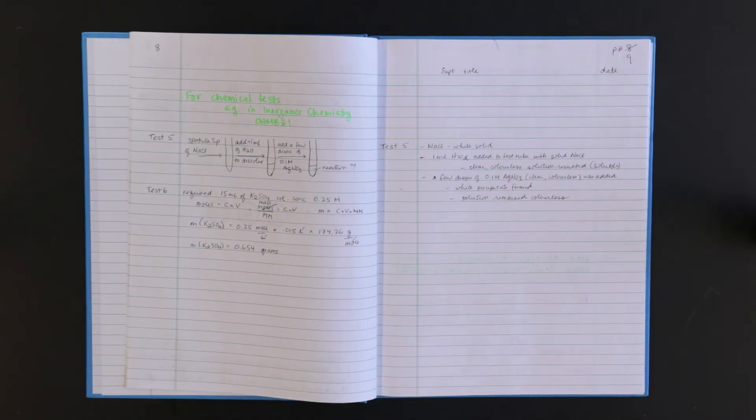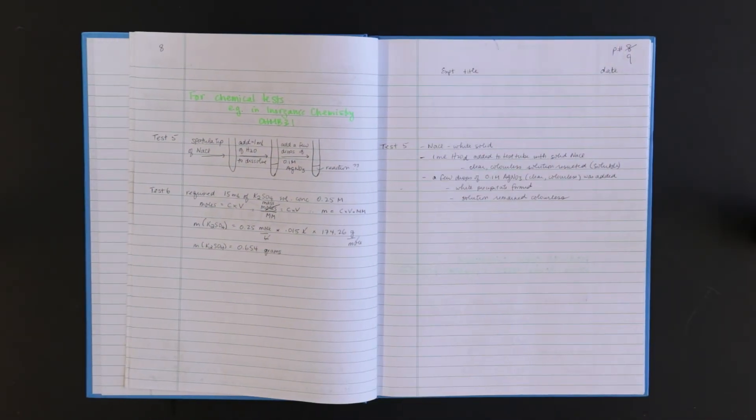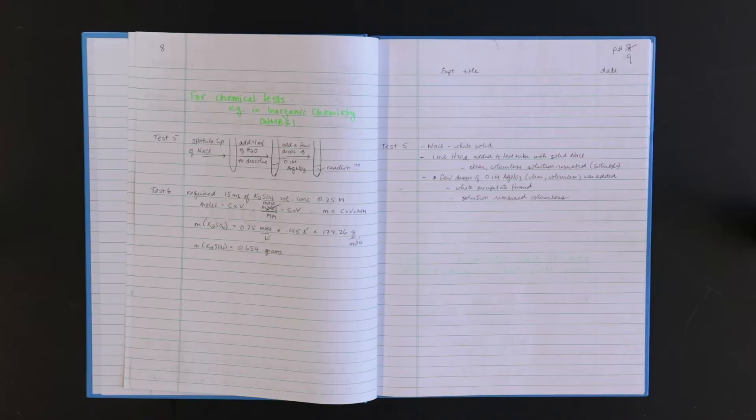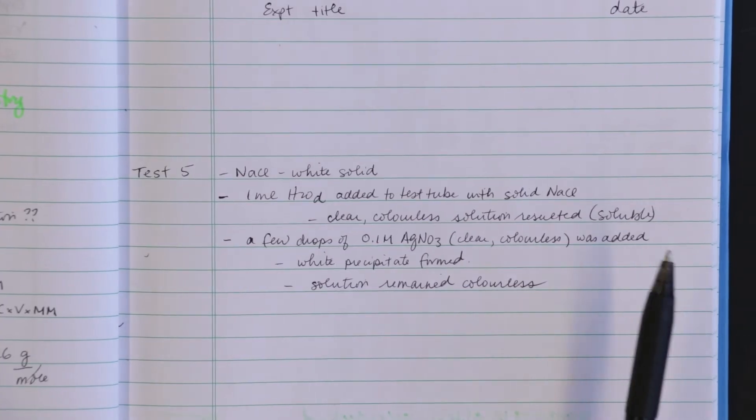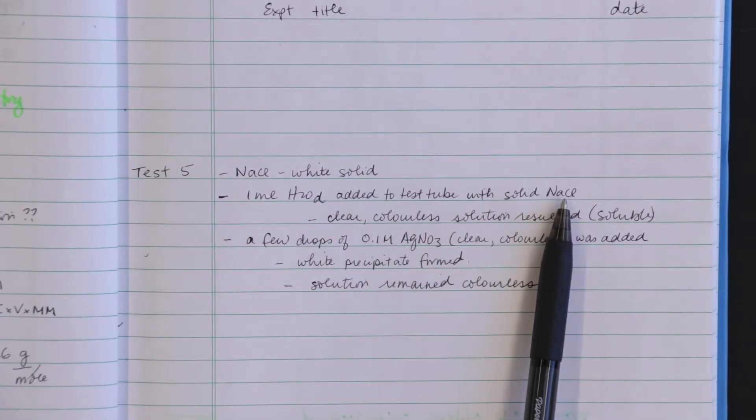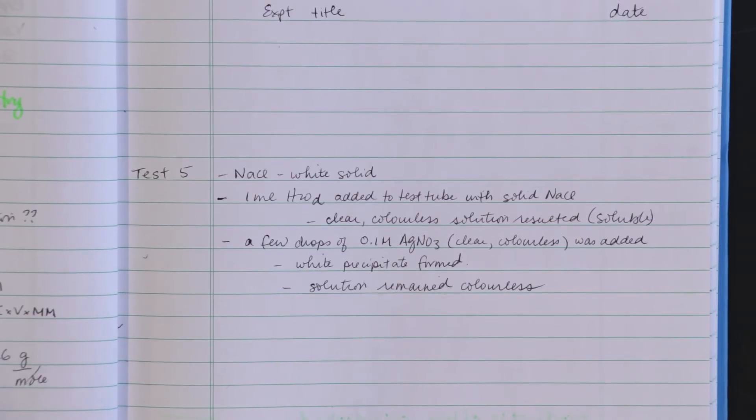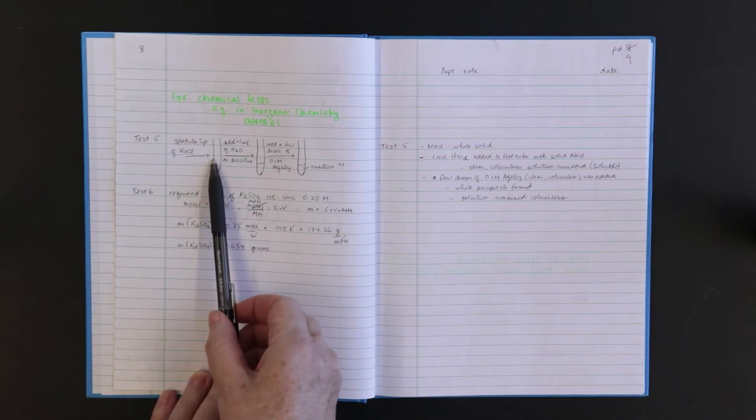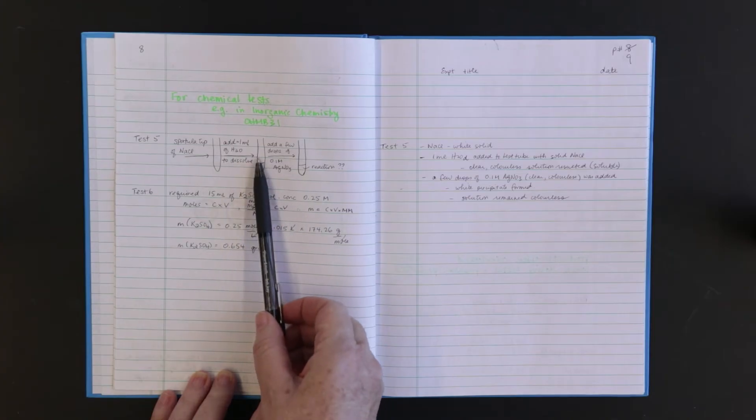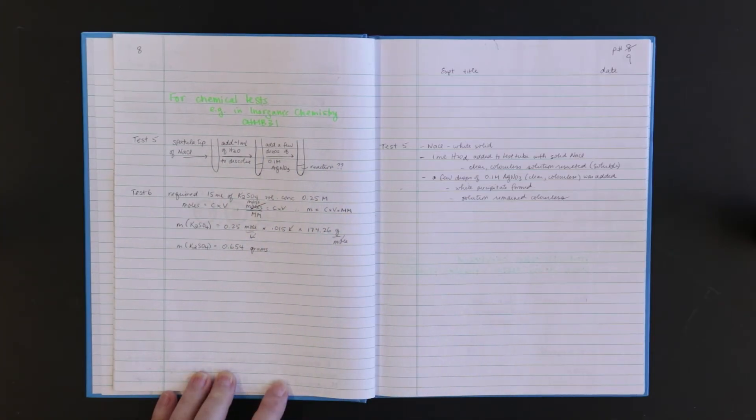In this case I'm showing a flow chart for a series of tests such as you will see in the inorganic chemistry course Chem B31. So for this test I have my plan and directly opposite on the right-hand page I have what was physically done in the lab with my observations. Pre-lab questions are answered on the left-hand page. In this case it is asking you to calculate the mass of a compound required for specific concentration and volume. Always show your units.